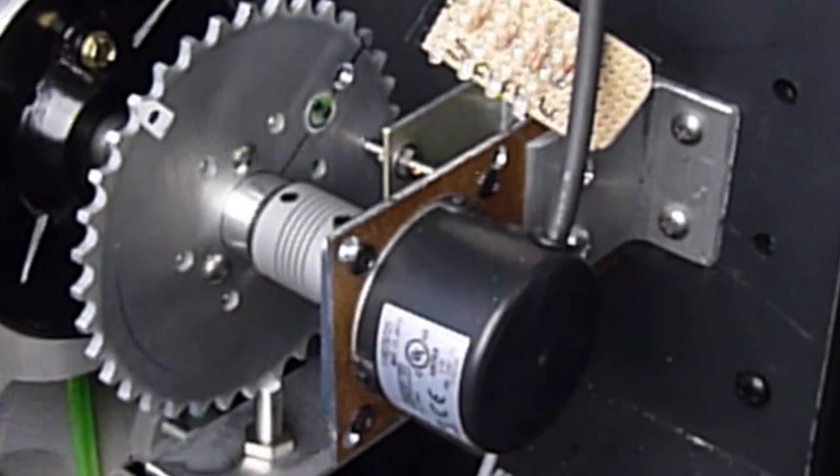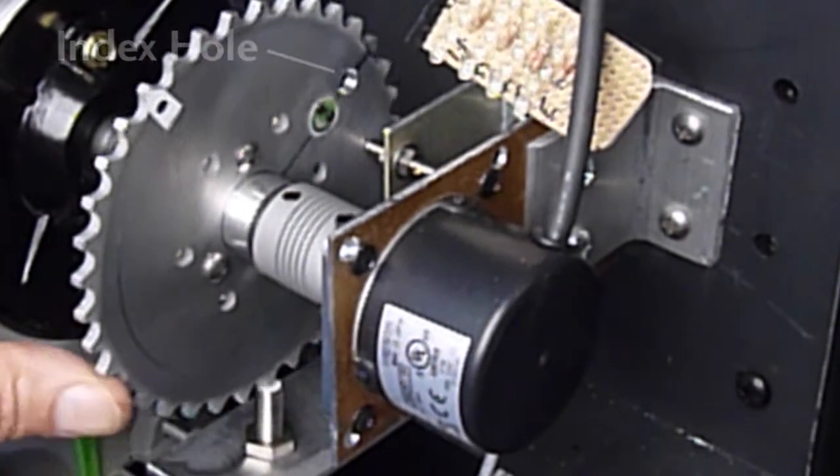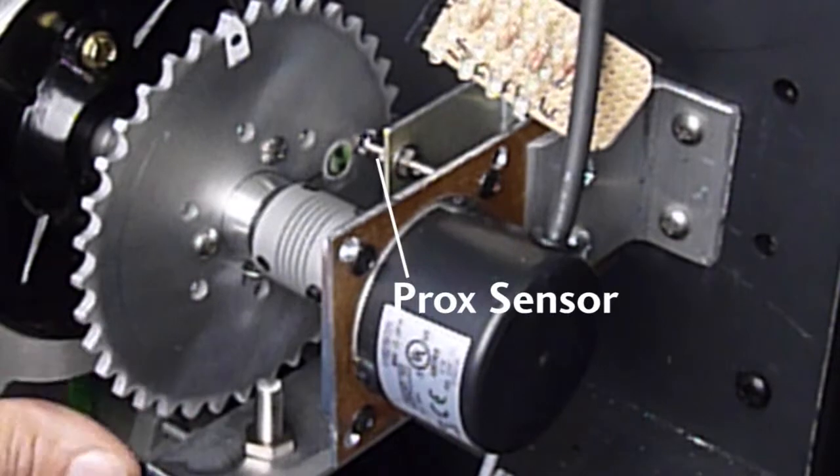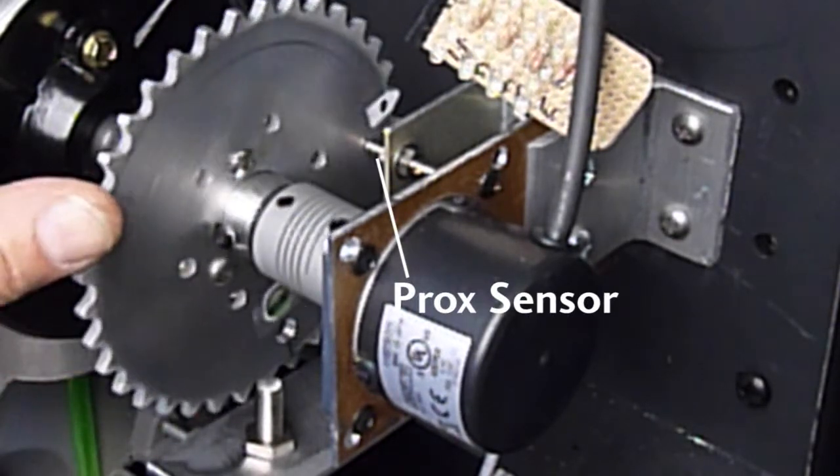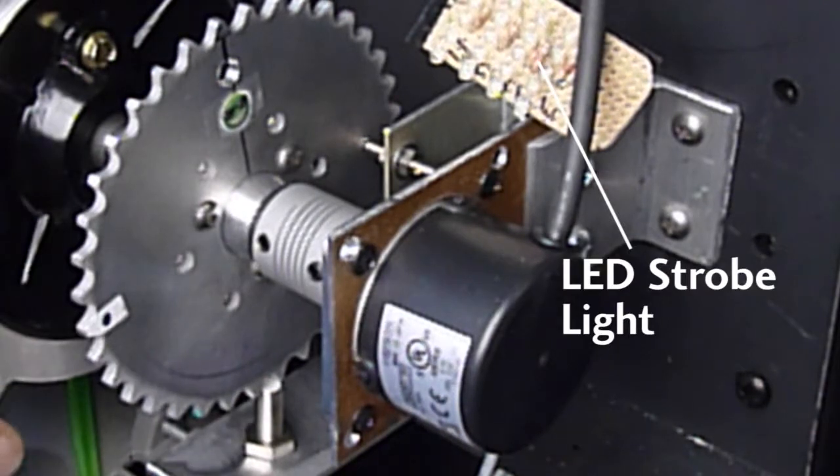In this set of videos we'll use the Productivity 3000's HSI module, or high speed input module, to detect the index hole in the sprocket with this proximity sensor, wait some number of sprocket teeth as detected by this proximity sensor, and then flash this strobe light.